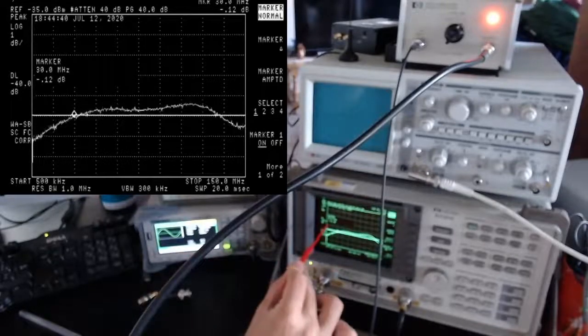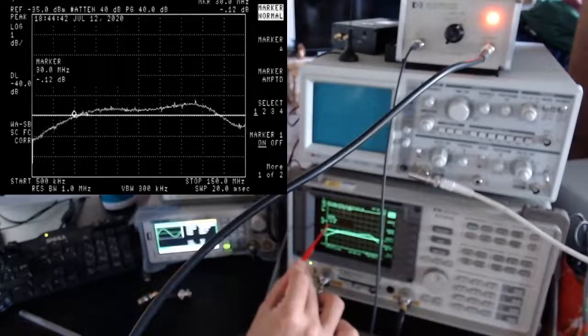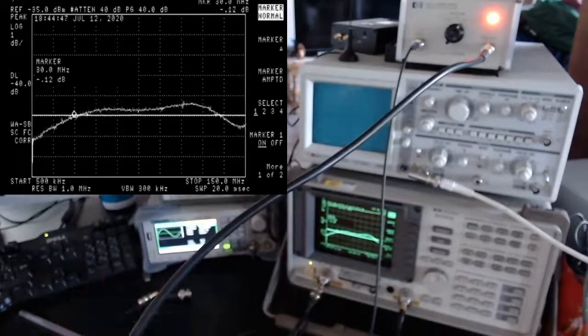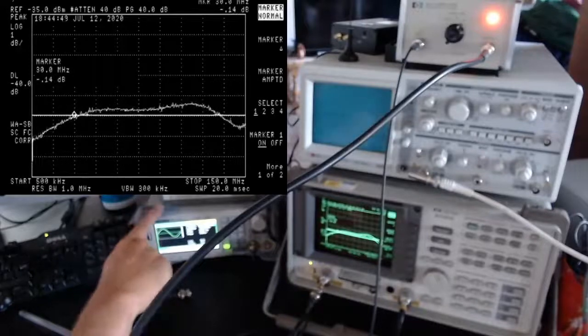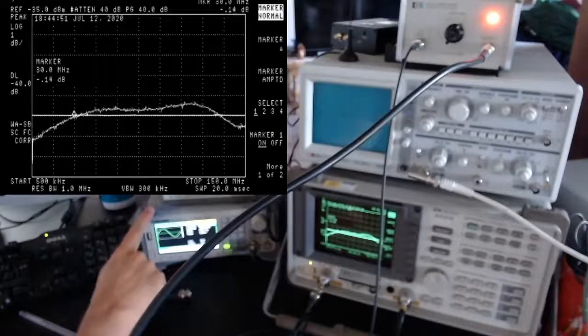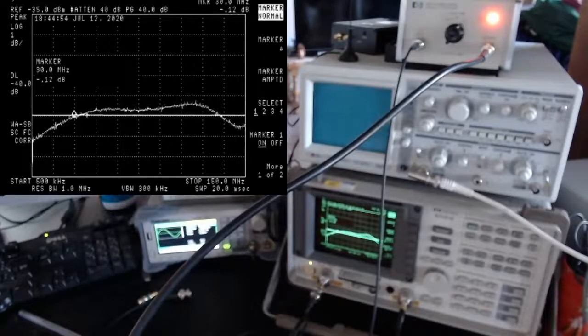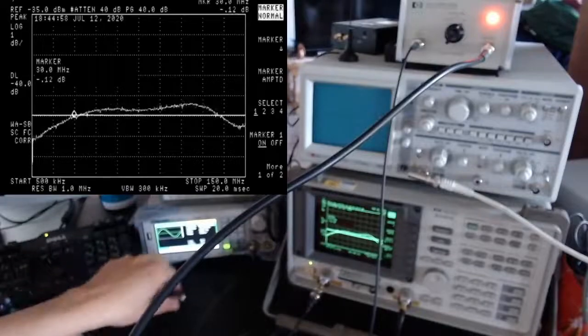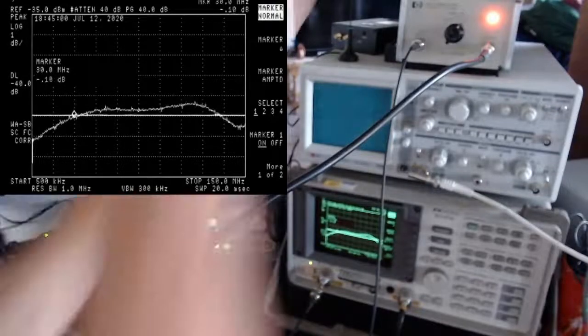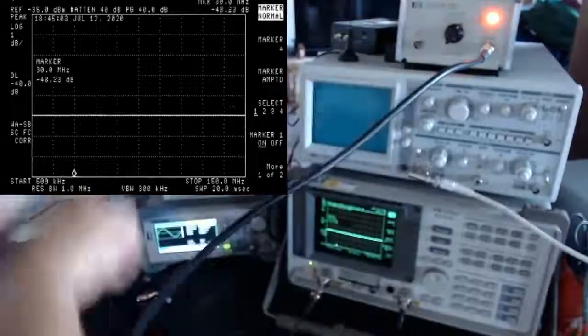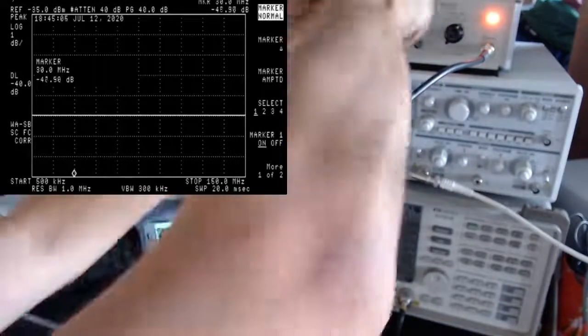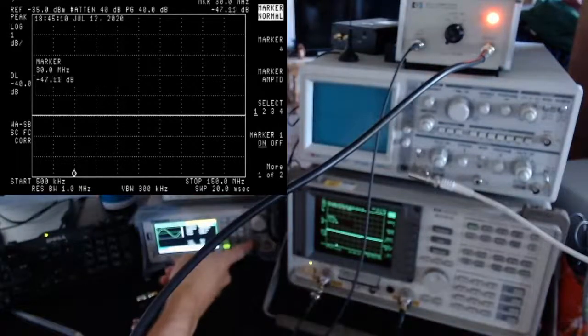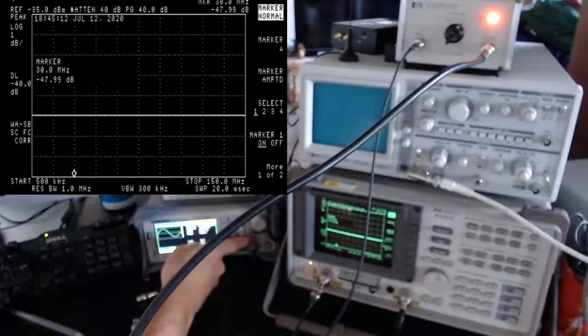Anyway, now we have this information. So at 30 MHz, the amplification is basically perfect at 40 dB. And I can verify that using my signal generator that can produce a 30 MHz signal at minus 40 dBm. So let's have a look. I'm now going to connect the output of the signal generator to the input of the amplifier. And what I expect is to see basically 39.9 or something. Let's see.